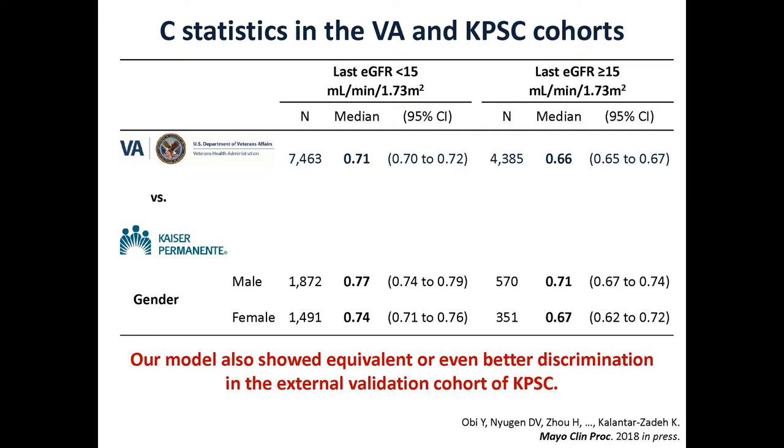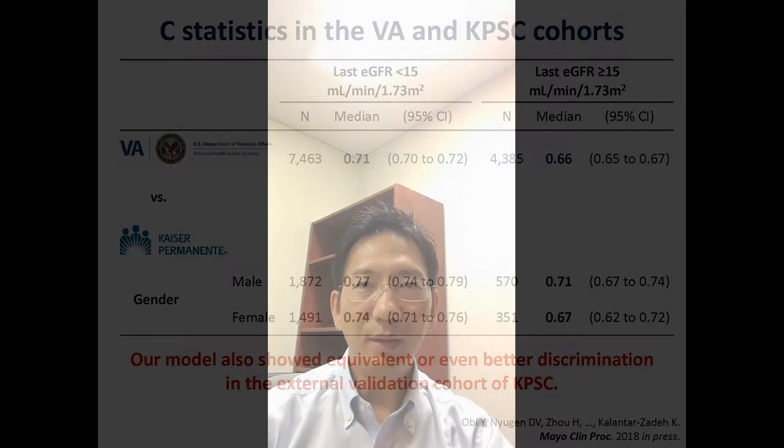Model discrimination in the internal validation cohort of veterans resulted in C-statistics of 0.71 among patients with eGFR below 15, and 0.66 among those with eGFR greater than or equal to 15 mL/min, respectively. The predicted survival was highly concordant with observed survival, as shown in Figure 2. In the KPSC external validation cohort, however, observed survival was typically greater than the predicted survival, especially in the high-risk groups, as shown in Figure 2E and F.